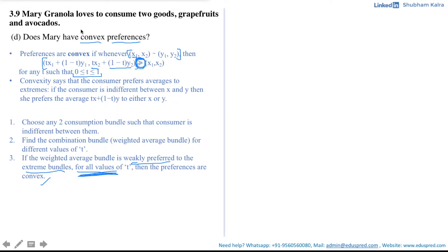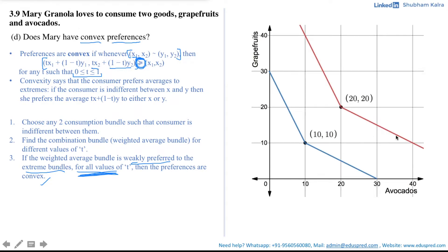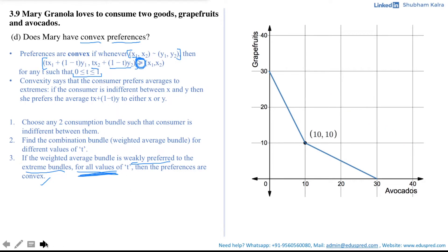In the previous video we drew two indifference curves for Mary. The blue indifference curve corresponds to the consumption bundle (10, 10) — 10 avocados and 10 grapefruits — and the red indifference curve corresponds to (20, 20). Both depict the same set of preferences but for different bundles. If we determine convexity for one, it applies to the other, so we'll work with just the blue indifference curve.